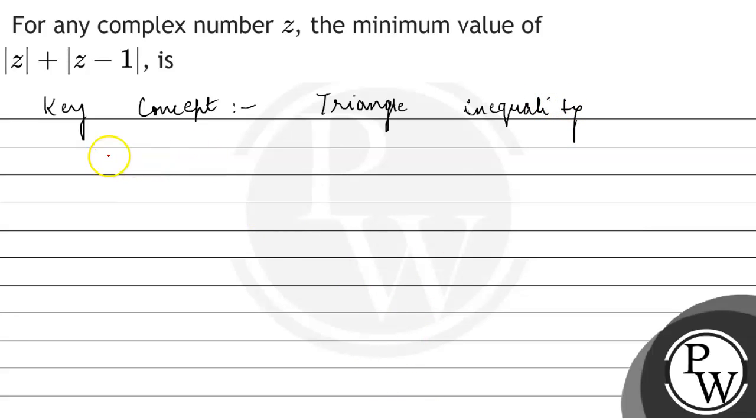It says that mod of z plus z minus 1 which is equal to mod of z plus mod of minus of z minus 1. This is a bracket which is equal to mod of z minus z plus 1.